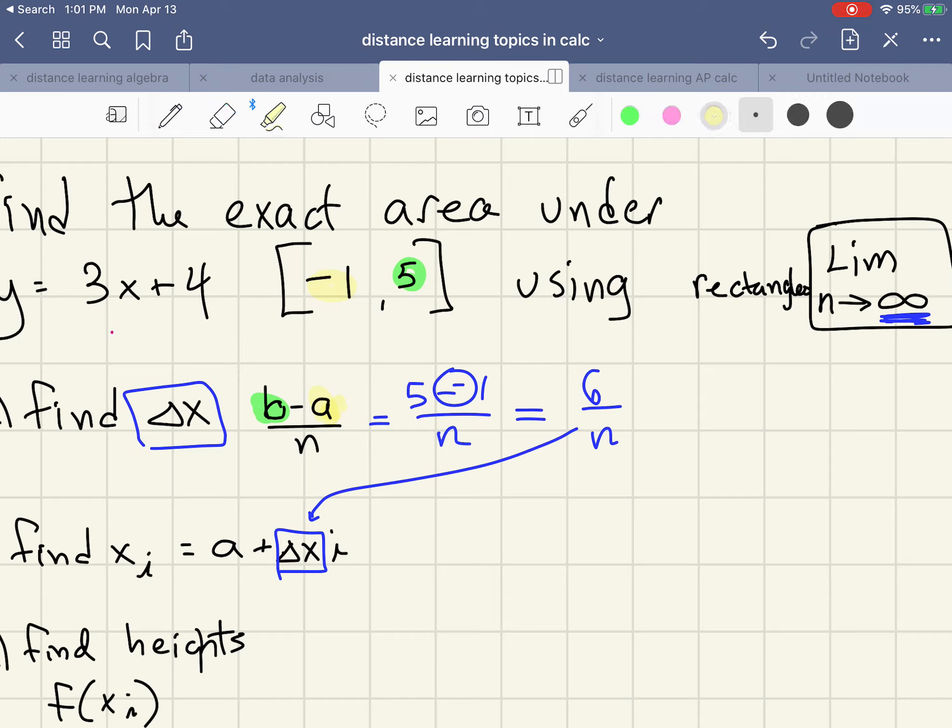Taking that number for delta x, plug in here also a again so negative one plus six over n times i is my endpoint. Now I personally think most people are going to have a little more success if I flip that around and write it like this. And that's how I find my endpoint, so endpoint number one I would find by plugging in one here, endpoint number two I'd plug in two and so on.